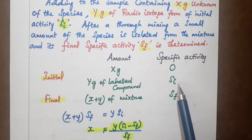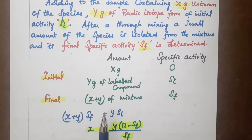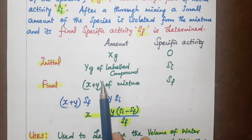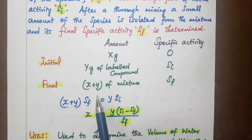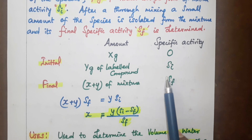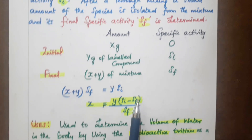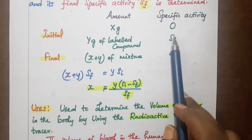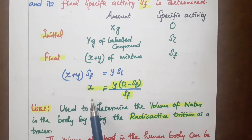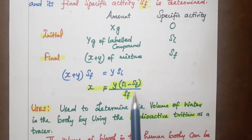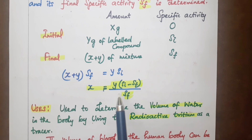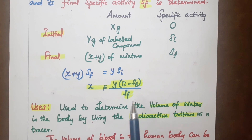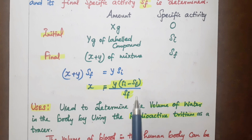The specific activity: Si is the initial specific activity, Sf is the final specific activity. X and Y are the two amounts. When you make a mixture, the specific activity of the final mixture is Sf, where the total amount is X plus Y. The formula gives: Sf equals Y times Si divided by (X plus Y), and therefore X equals Y times (Si minus Sf) divided by Sf. This is the Isotope Dilution Analysis formula.